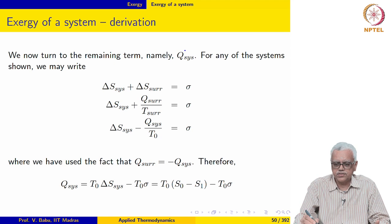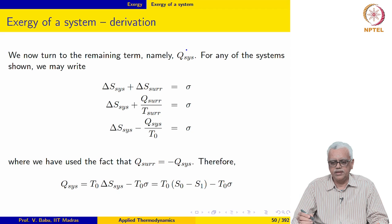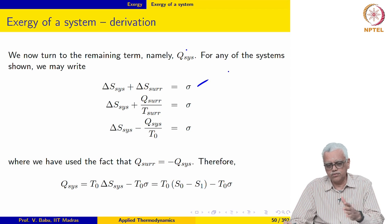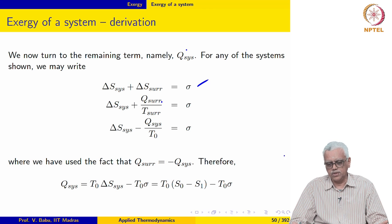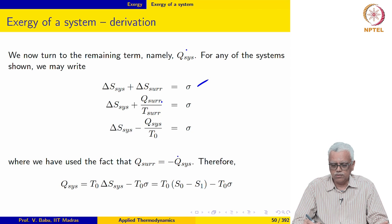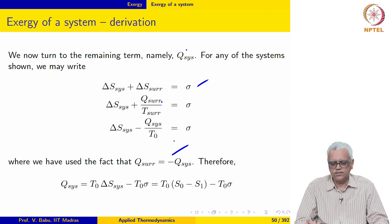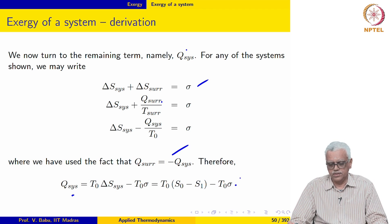Let us take the next term which is Q_SYS. We may write delta S_system plus delta S_surroundings for any of the systems that we considered earlier. Delta S_surrounding is nothing but Q_surrounding over T_surrounding. And Q_surrounding is minus Q_SYS. So we may write this and finally write Q_SYS equal to this expression.